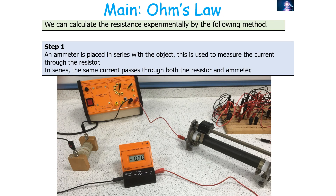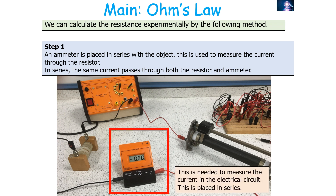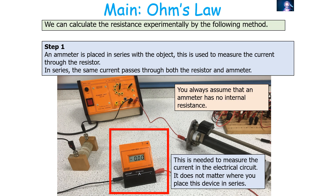We can calculate resistance experimentally. First, place an ammeter in series with the object to measure the current through the resistor — in a series circuit, the same current passes through both. The ammeter always reads the same value regardless of where it is placed in a series circuit. You assume that an ideal ammeter has no internal resistance.